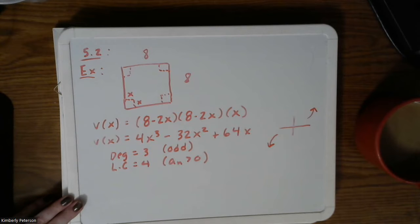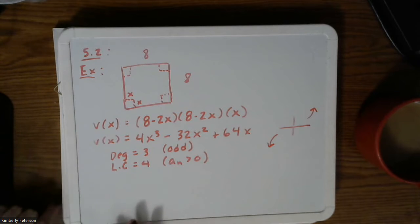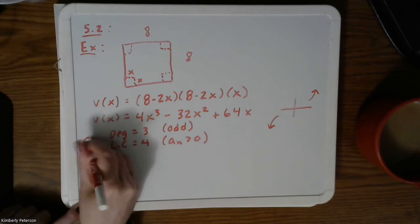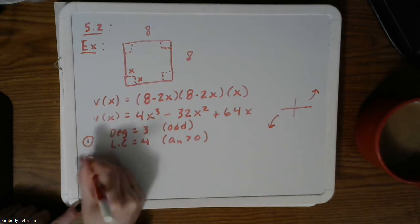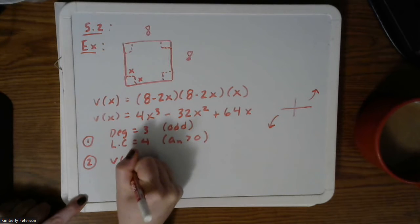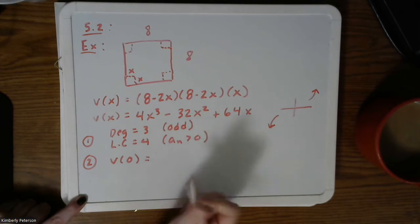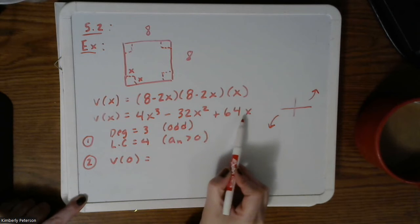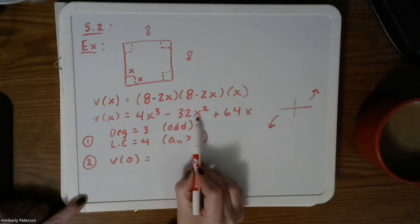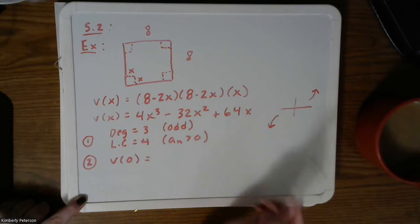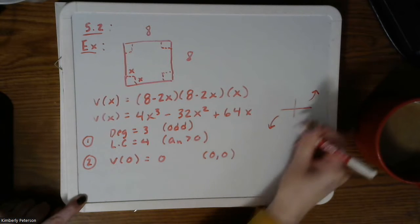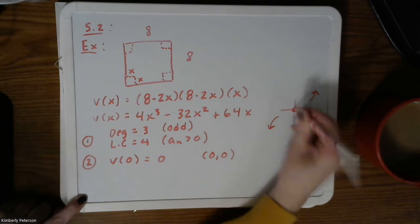So that's step one when you are starting to graph the function. Step two is finding the intercepts. We first found v of zero. If you plug zero into the expanded form, all terms wipe out and you get zero, so this function goes through the origin.